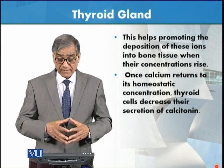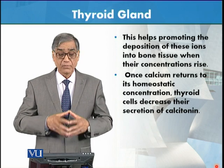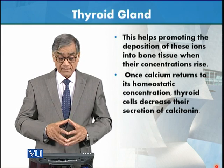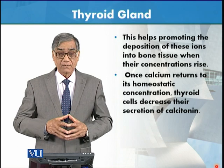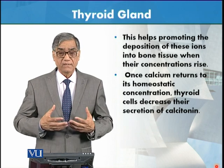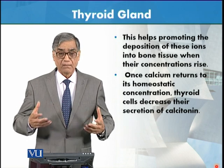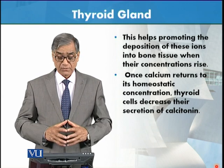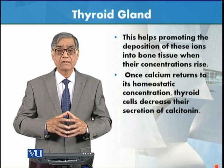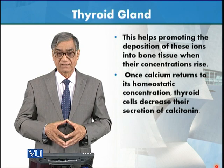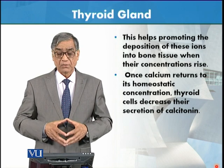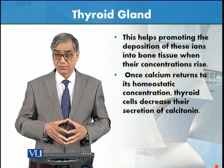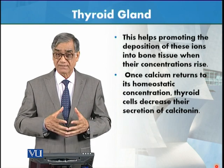Once calcium returns to its homeostatic concentrations, the cell then decreases the secretion of calcitonin — so as the calcium amount normalizes, the production and secretion of calcitonin is also reduced. In its presence there is an uptake of calcium ions by the bones, by the muscles, and so on.